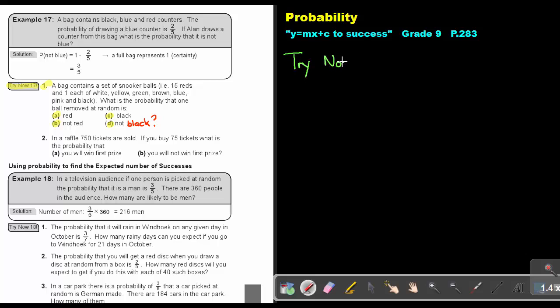Try Now 17 number 1 A. A bag contains a set of snooker balls, 15 reds and one each of white, yellow, green, brown, blue, pink, and black. What is the probability that one ball removed at random is red? So the probability of red, and how many red ones are there? 15.